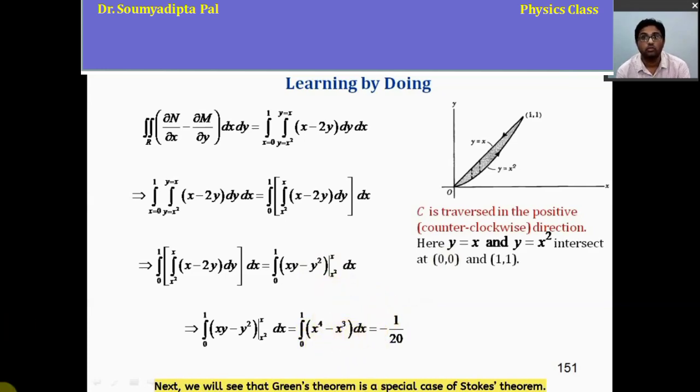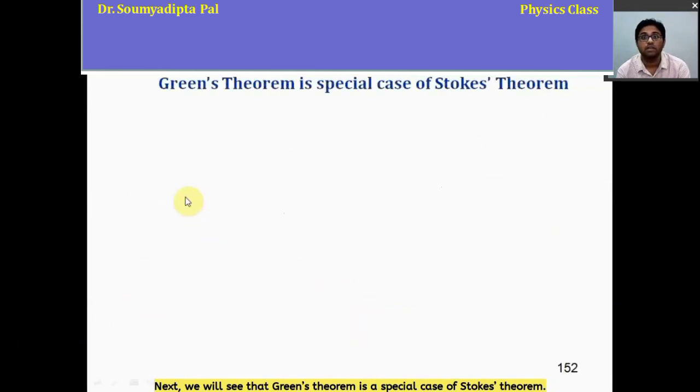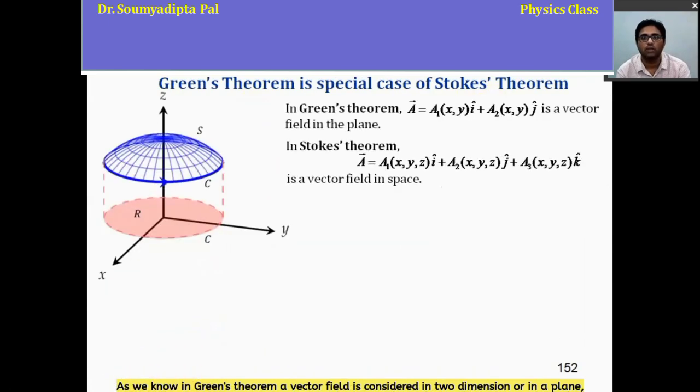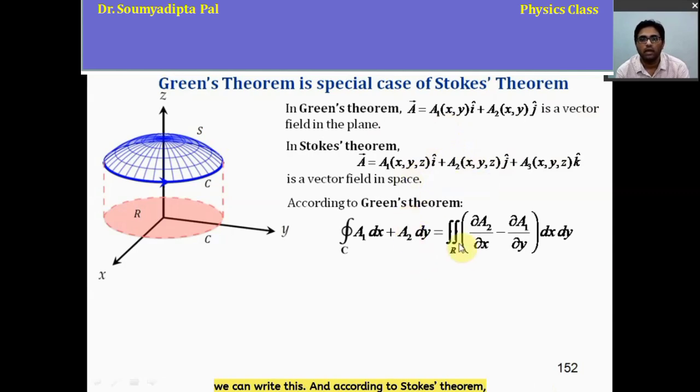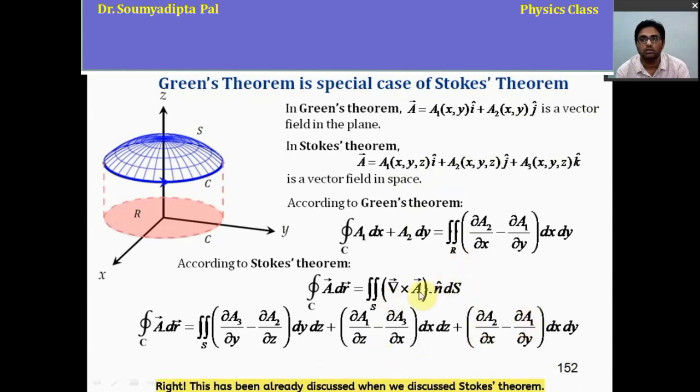Next, we will see that Green's theorem is a special case of Stokes theorem. We can represent Green's theorem from Stokes theorem. So, let's understand that. As we know, in Green's theorem, a vector field is considered in two dimension or in a plane. But in Stokes theorem, a vector field is considered in three dimensional space. Now, according to Green's theorem, we can write this. And according to Stokes theorem, we can write this mathematical equation. This has been already discussed when we discussed Stokes theorem.